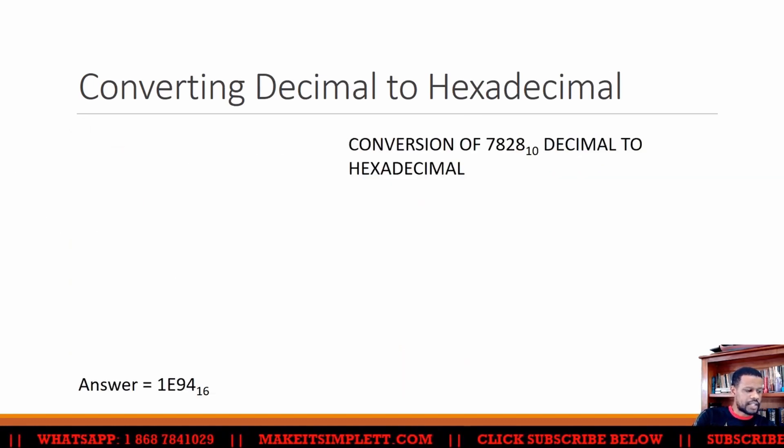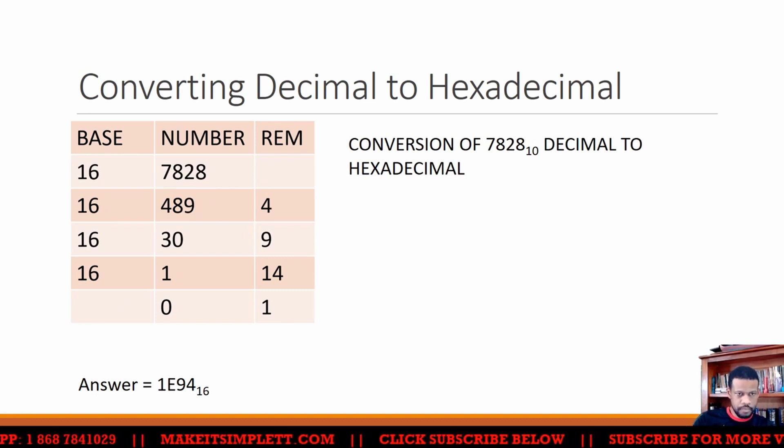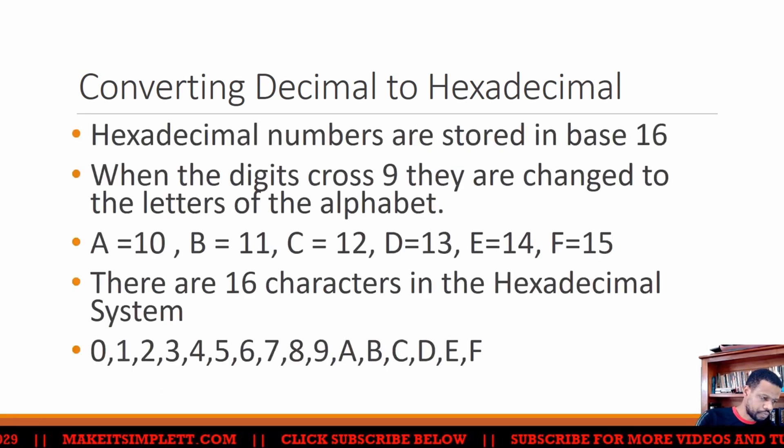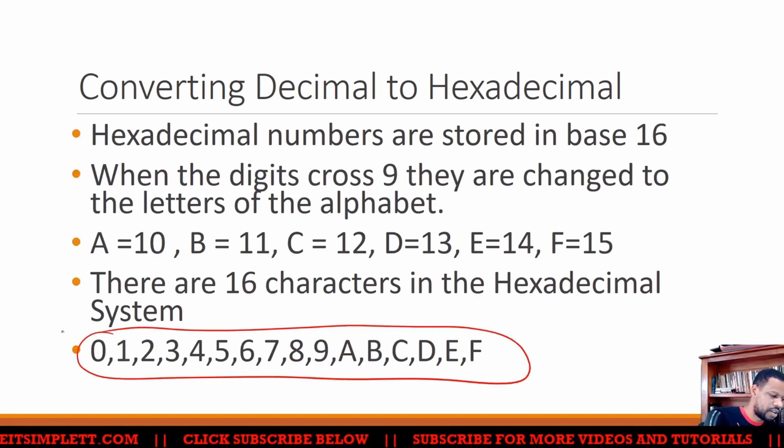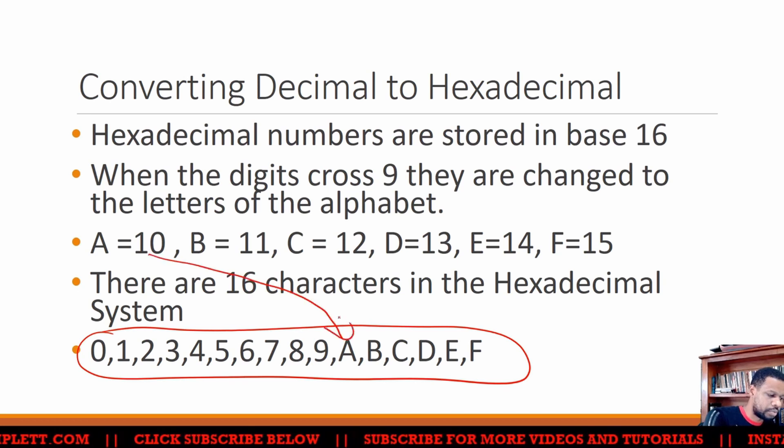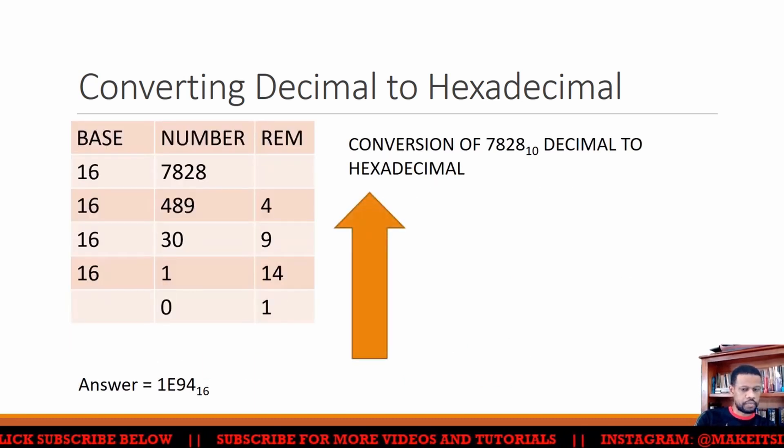When you're going from decimal to hexadecimal, you divide it by sixteen, because hexadecimal is sixteen characters, zero to F. When you reach ten, you'll put A, and when you do the calculations, no questions here, right? That should be okay.